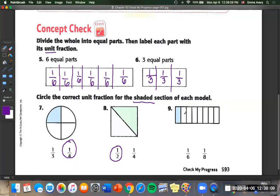And for nine, we have a total of one, two, three, four, five, six, seven, eight pieces. So one eighth. On to the next page.